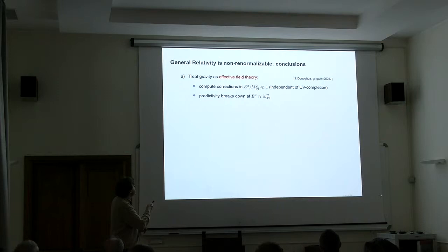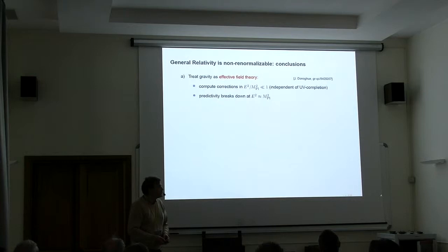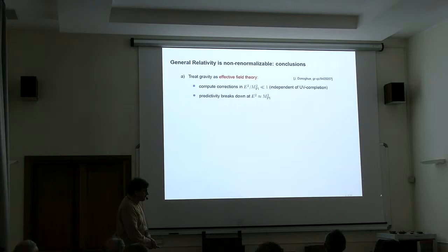So where to go from here? Common folklore is that general relativity still works as an effective field theory. It should be good as long as our energy scales are below the Planck scale. We can systematically compute quantum corrections in this regime, and if we have a UV cutoff, we have predictive power there.